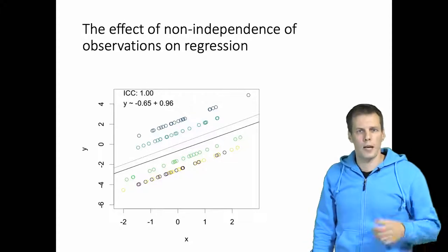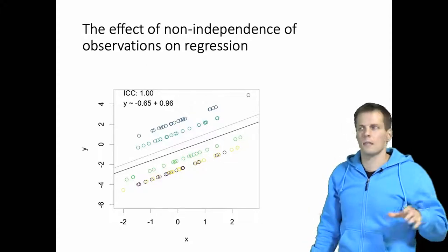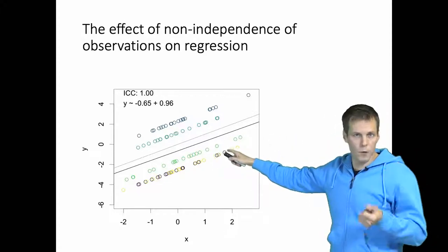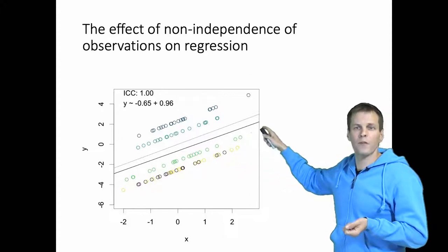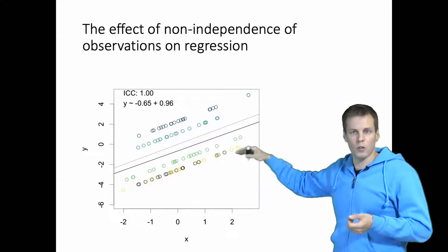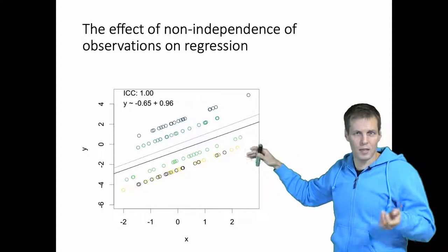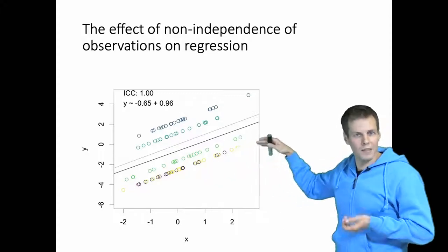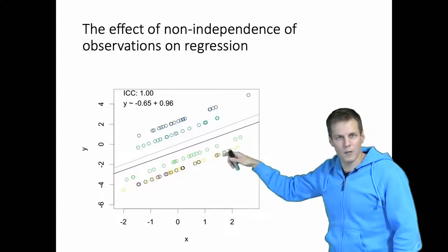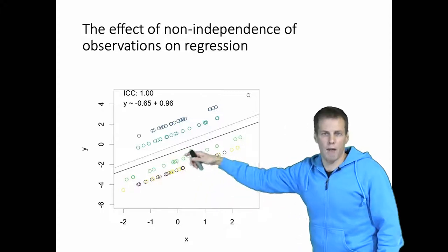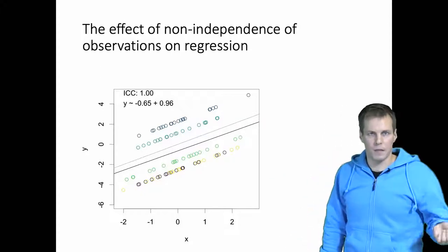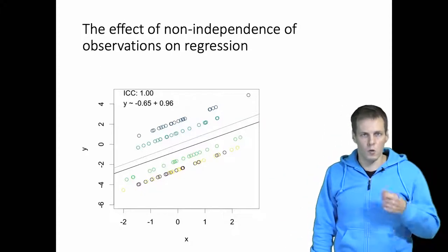One way to understand why: even if we have just one error value per cluster, those values still give us useful information about the direction of the line, but not about how high the line is. When the errors are exactly the same for each cluster — intraclass correlation equals one — all clusters form an exact line parallel to the population regression line, but the intercept is estimated less efficiently. This would be a very unusual scenario.